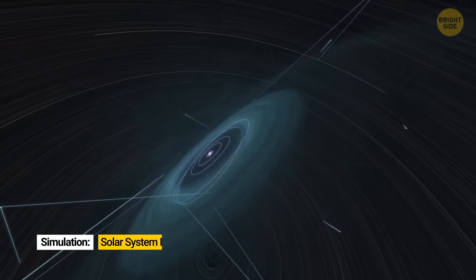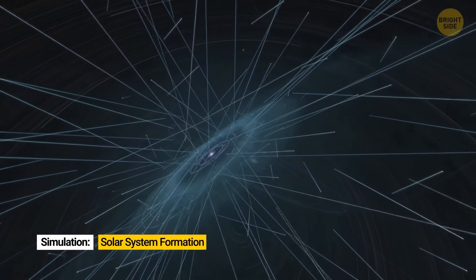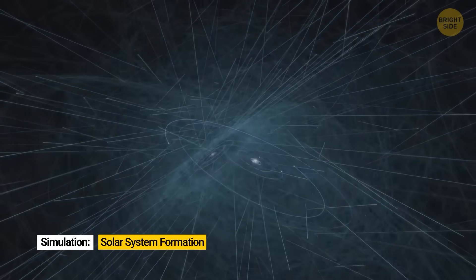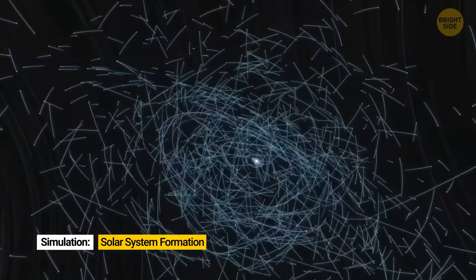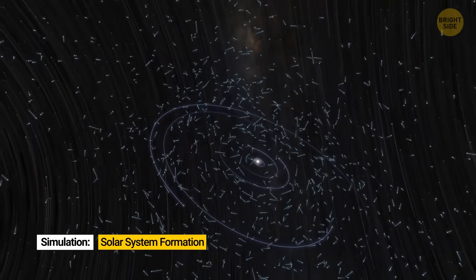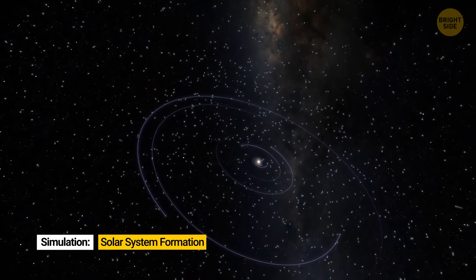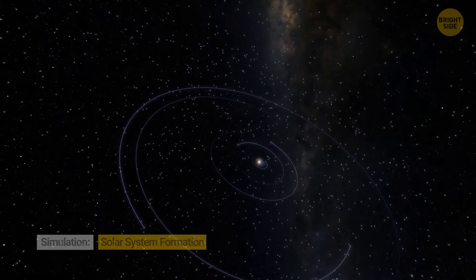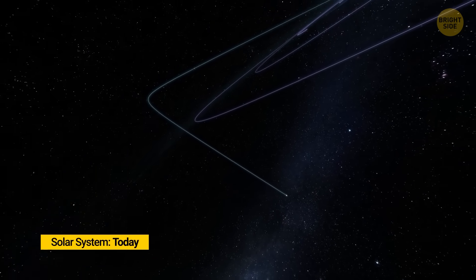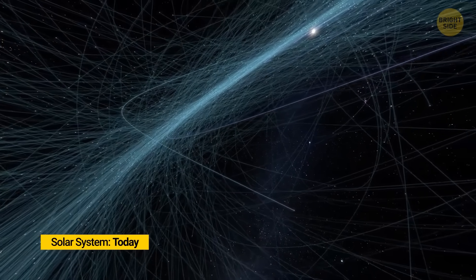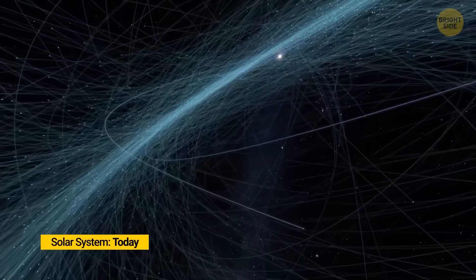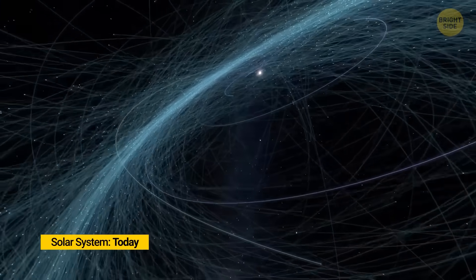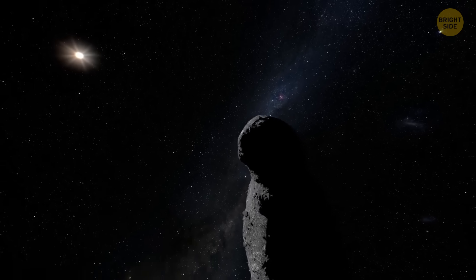NEOs are leftover materials from when the planets were forming. Some of that rubble ended up tucked safely in the asteroid belt between Mars and Jupiter, but some pieces got nudged onto paths that cut across Earth's orbit. Those are the ones we care about, because they're still wandering around today, looping around the Sun, and every now and then, passing uncomfortably close to us.